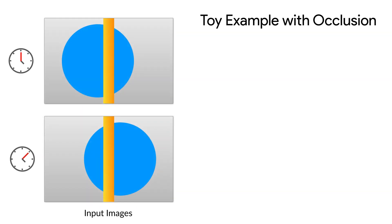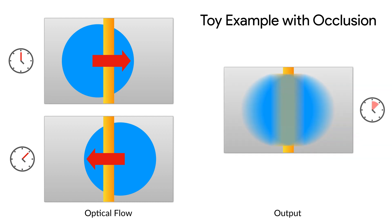Now, let's imagine trying to predict that motion blurred image from two sharp inputs, taken at the start and end of the animation. An existing method is to estimate optical flow, which predicts motion vectors between the images, and then blur along those motion vectors. But naively using optical flow to synthesize motion blur doesn't properly handle the yellow occluder, and incorrectly blurs it in addition to the moving blue object.